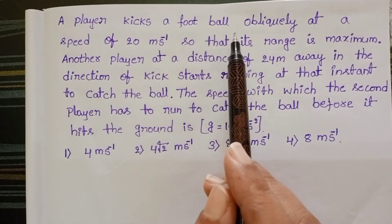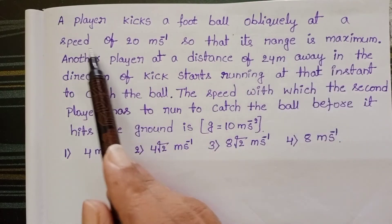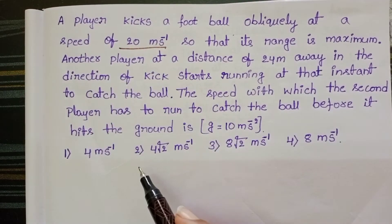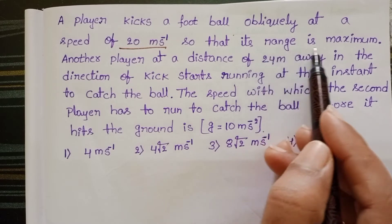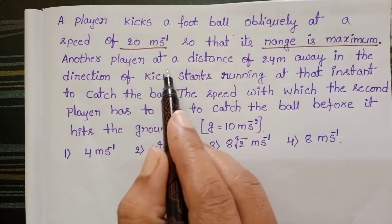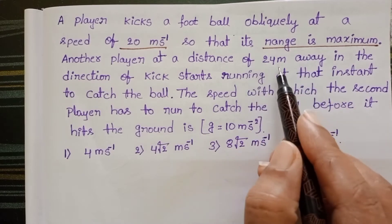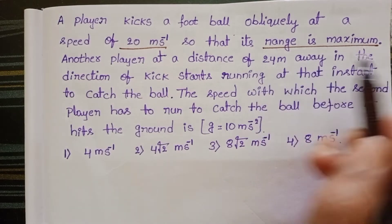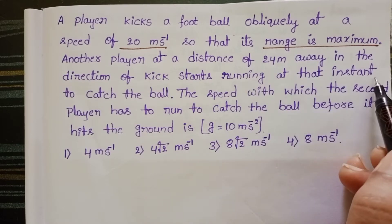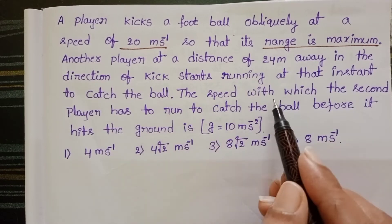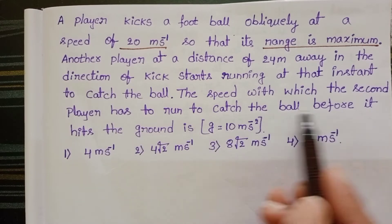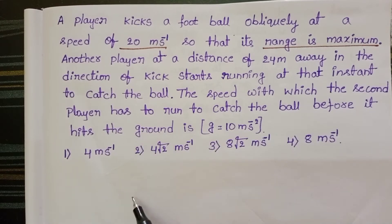A player kicks a football obliquely at a speed of 20 meters per second so that its range is maximum. Another player at a distance of 24 meters away in the direction of kick starts running at that instant to catch the ball. The speed with which the second player has to run to catch the ball before it hits the ground.